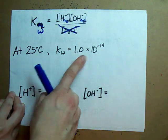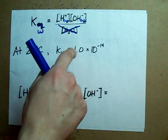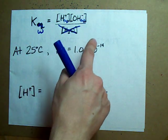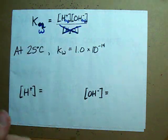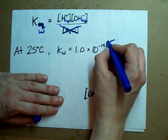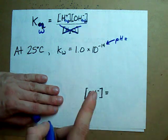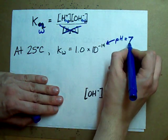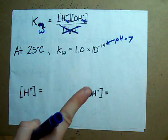At 25 degrees, this is what it is. Accept it. It's 1.0 times 10 to the negative 14. And if you're wondering, yes, this is related to the fact that the pH of water at 25 degrees Celsius is 7. Exactly half of that value. Not a coincidence.